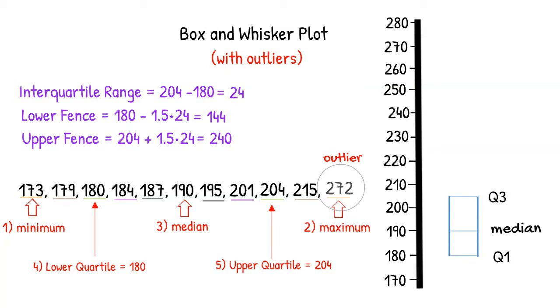Since none of our values go below the lower fence, we draw a line at 173 to represent the minimum and make our first whisker. Since we have a number higher than our upper fence, we indicate it separately with its own marking.